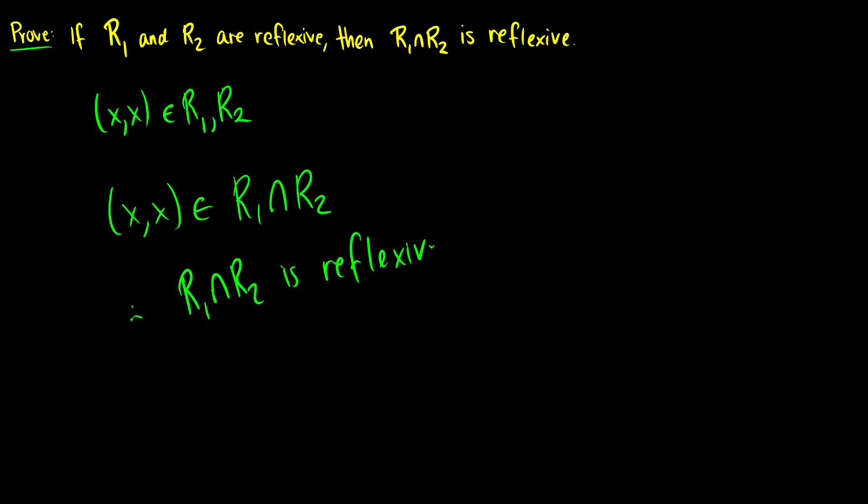I know you might be thinking, well duh, but the question is can you prove it? And you have to be able to prove this. First we pick an arbitrary pair in both. We show the arbitrary pair is in the intersection. And because that's true for any arbitrary pair we picked, the intersection is reflexive.